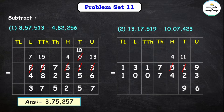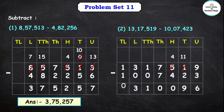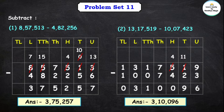Hundreds place: 4 minus 4 is 0. Thousands place: 7 minus 7 is 0. Ten-thousands place: 1 minus 0 is 1. Lakhs place: 3 minus 0 is 3. Top lakhs digit: 1 minus 1 is 0. So our final answer is 3,10,096.